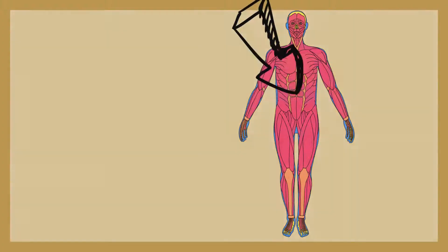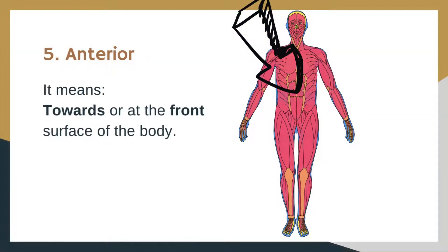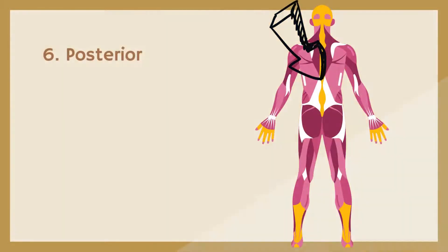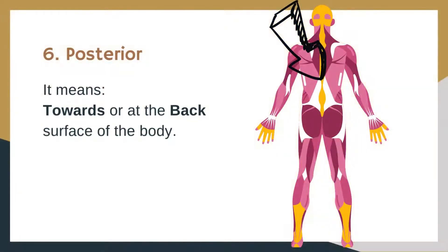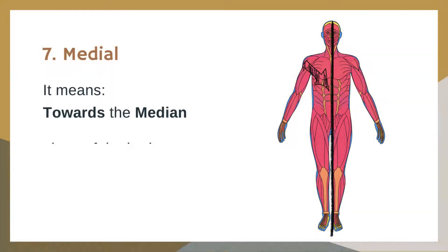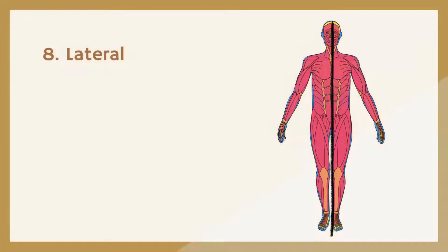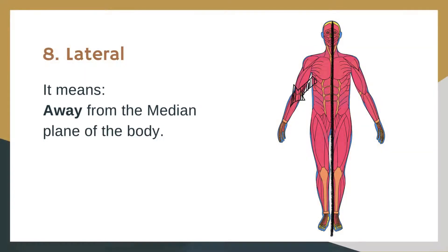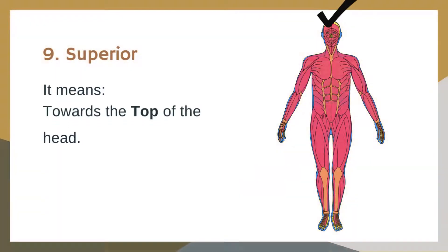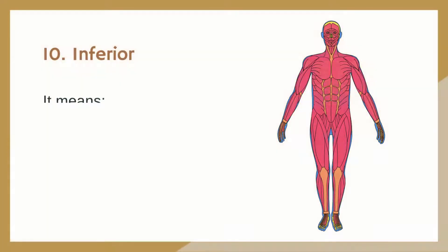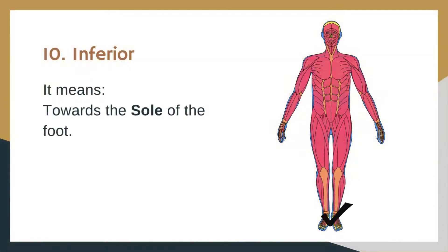Anterior: it means towards or at the front surface of the body. Posterior: it means towards or at the back surface of the body. Medial: it means towards the median plane of the body. Lateral: it means away from the median plane of the body.